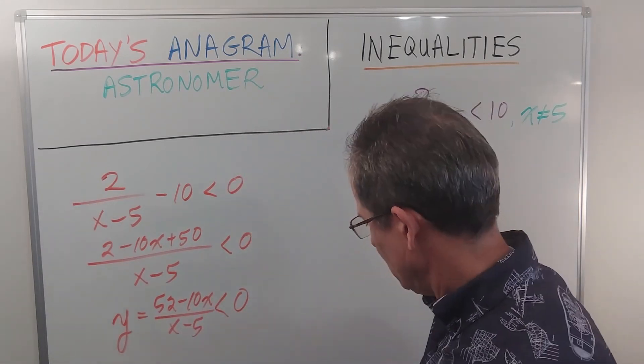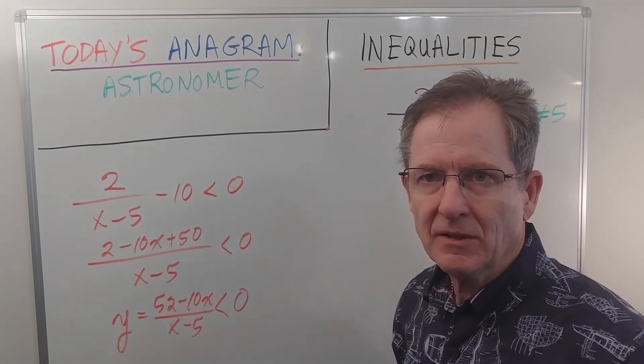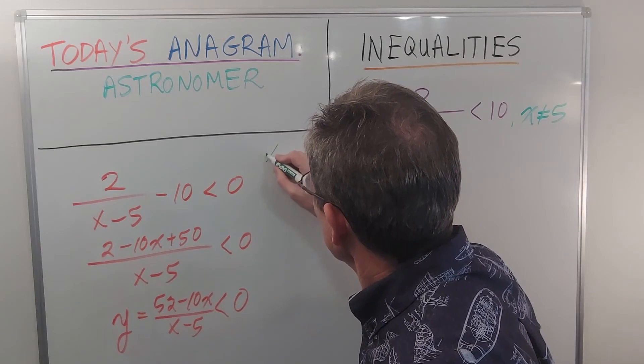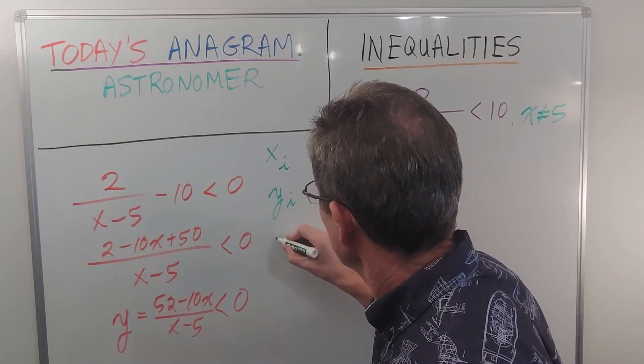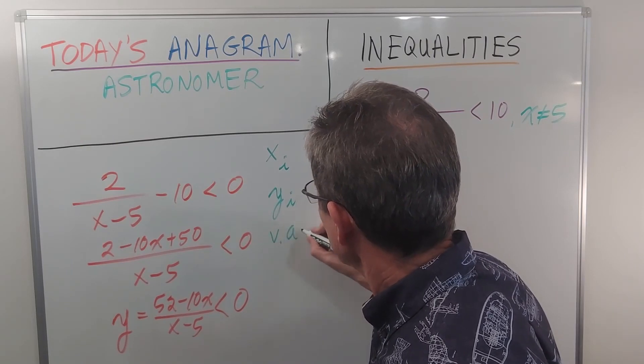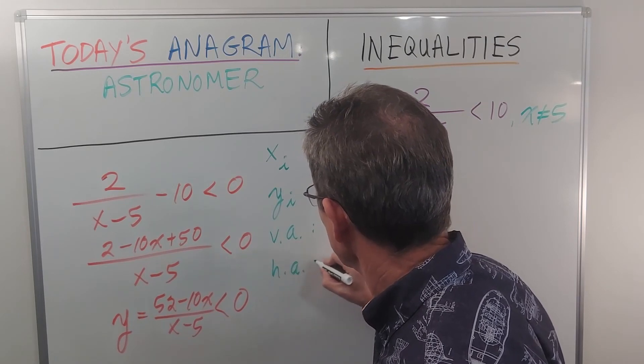Now let's consider some of the features of this rational function, such as the x-intercept, the y-intercept, any vertical asymptote, and any horizontal asymptote.